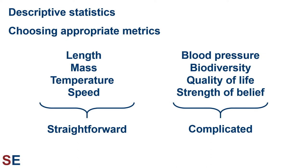On the left are some straightforward metrics that are used all the time in the sciences. Values like length, mass, temperature, and speed are well defined — what they measure is obvious and we often have a direct use for the actual numbers. On the right are values that are less straightforward. Do we really care about blood pressure itself, or do we measure it because it's related to the risk of heart attack, the real value we care about? We all value biodiversity and quality of life, but how do we measure these things? By the number of species, or by using lifespan? Both of these choices are missing something — the variation in types of species, and whether the life is enjoyable or not. Strengths of beliefs are often measured on a 5 or 7 point scale, but what does that really mean? Understanding which metrics are the best ones to use for the question at hand is an important part of statistics and experimental design.